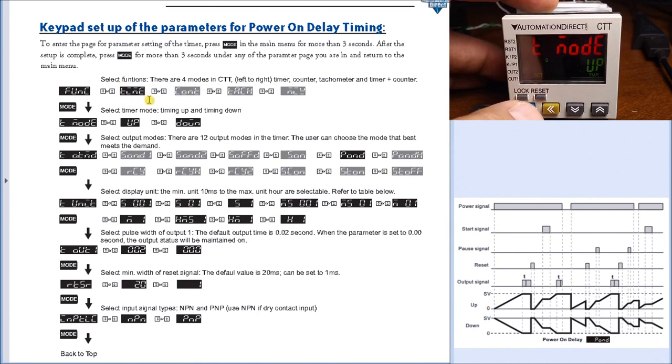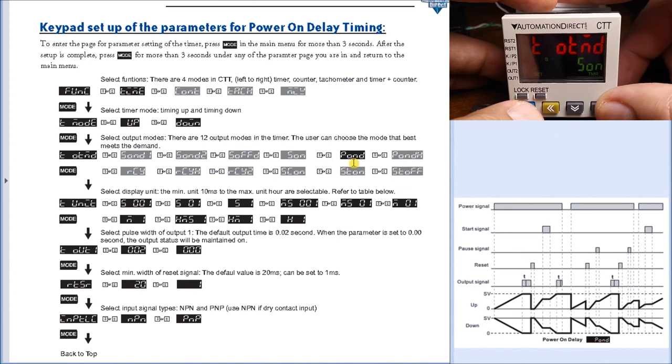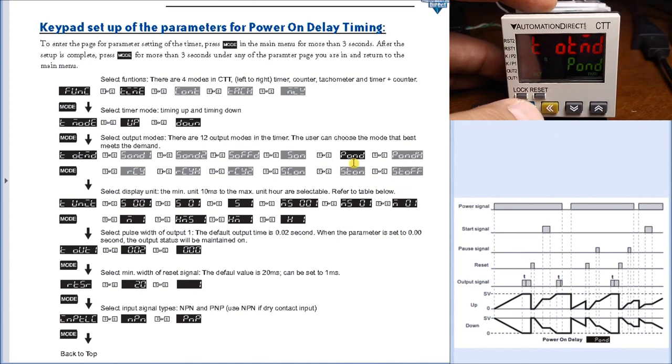We have up time, then next we'll set our parameter of how we want to operate. Currently right now we have it on this one here, so we want the power on delay. We'll hit the up arrow key once and we have the power on now, and just hit mode and it locks that into place.